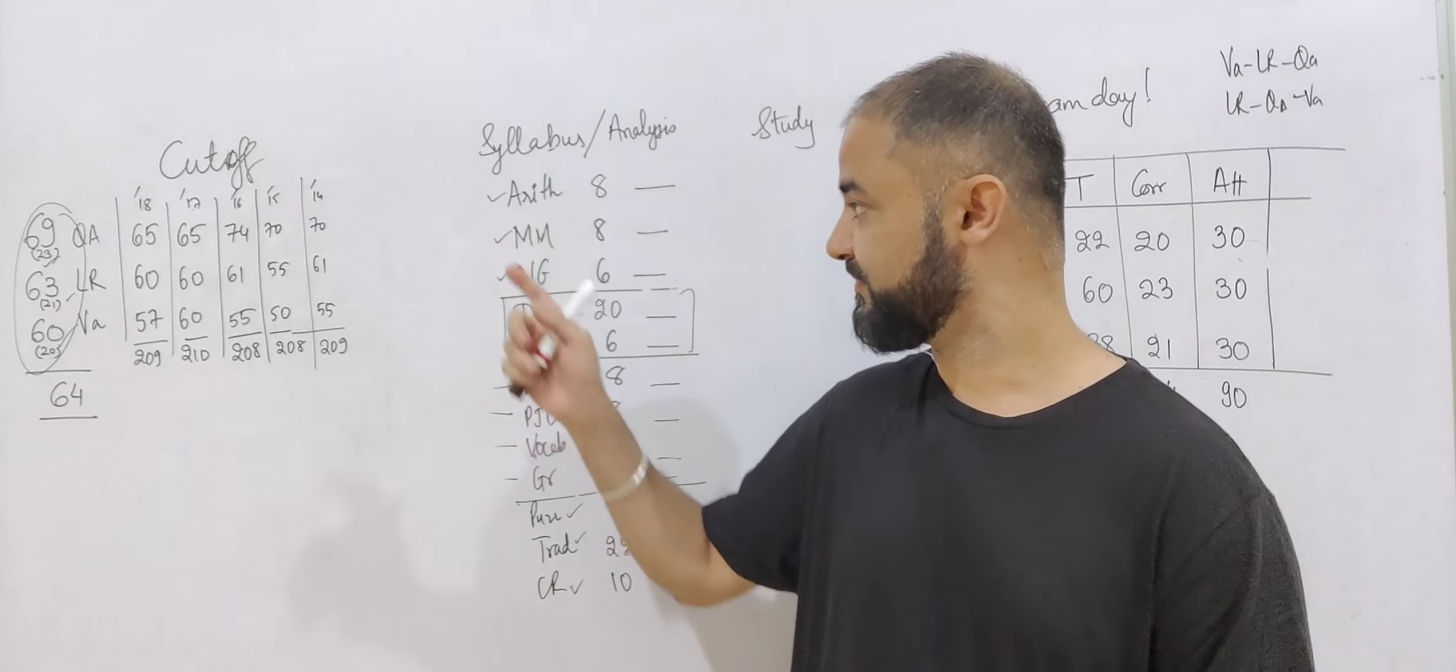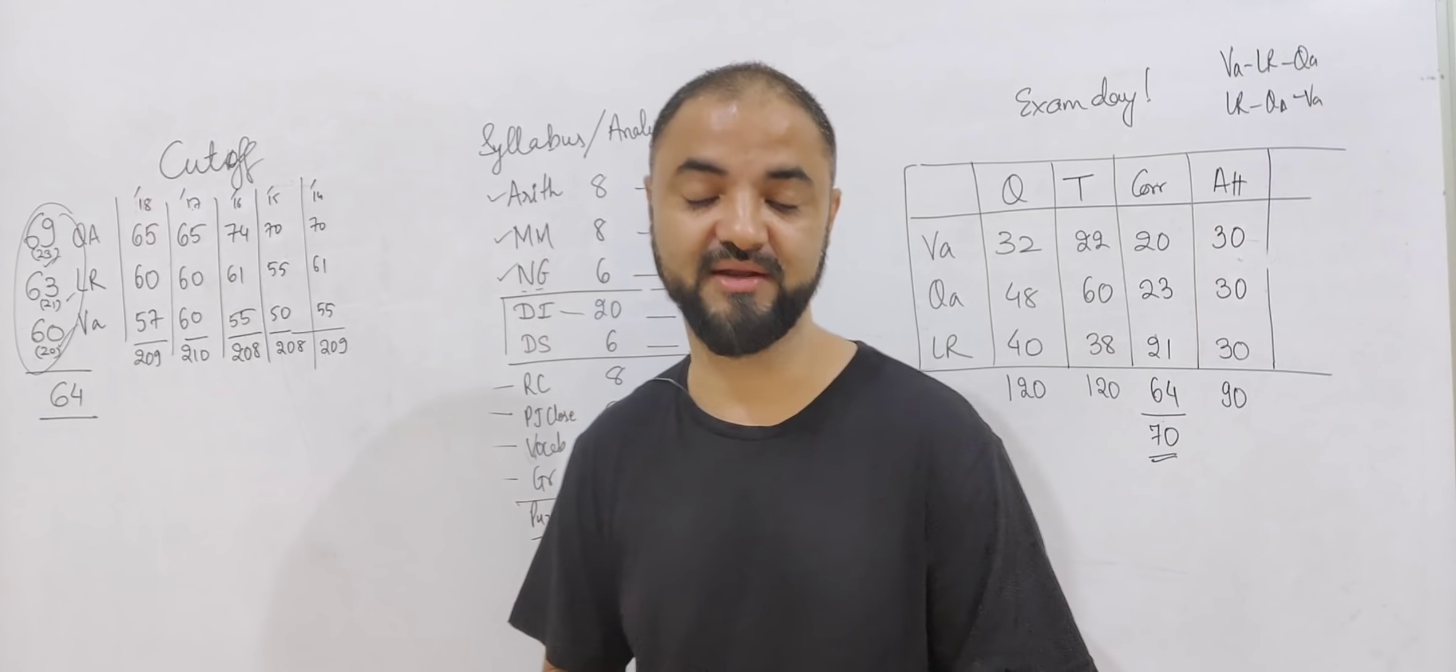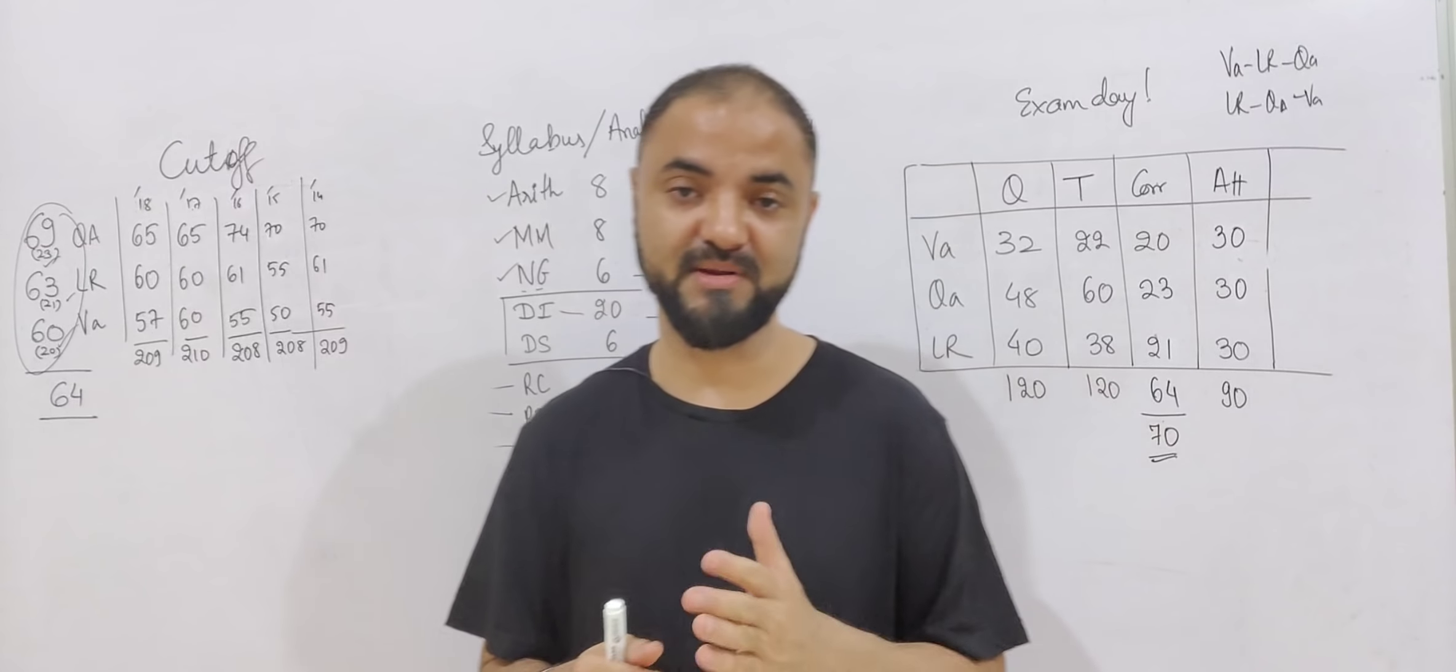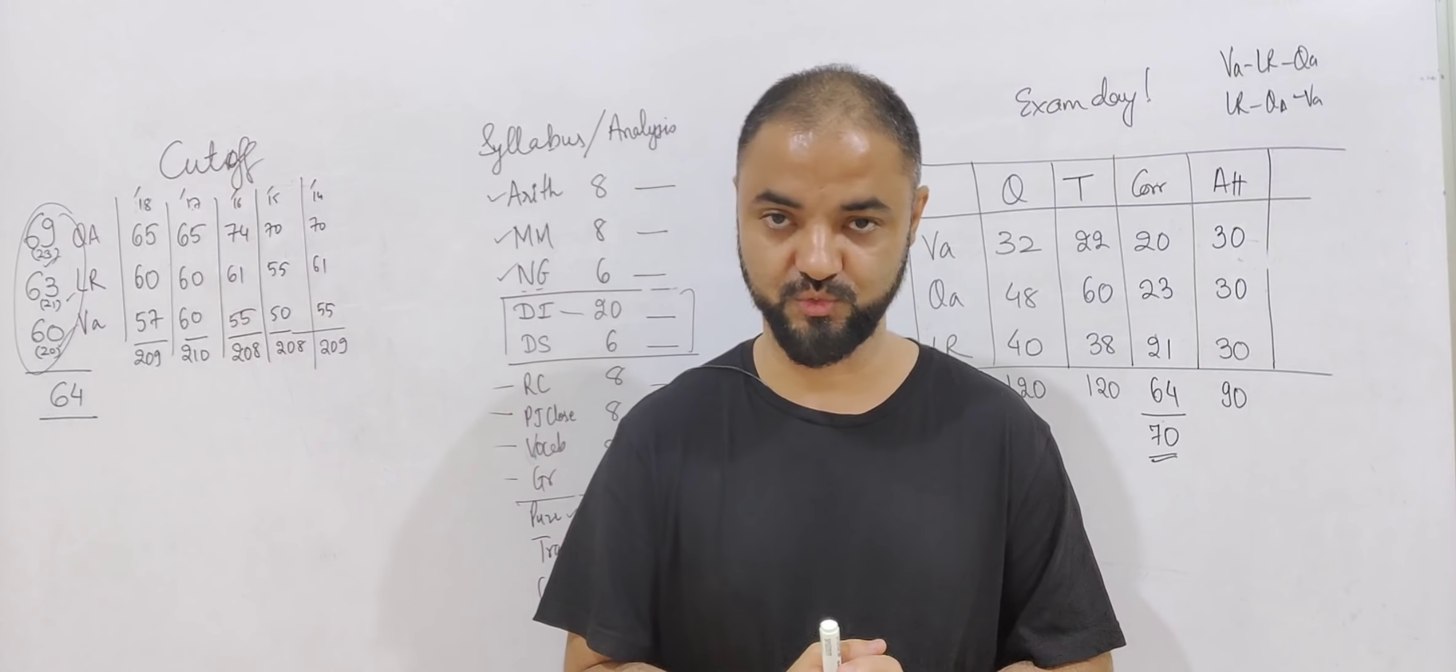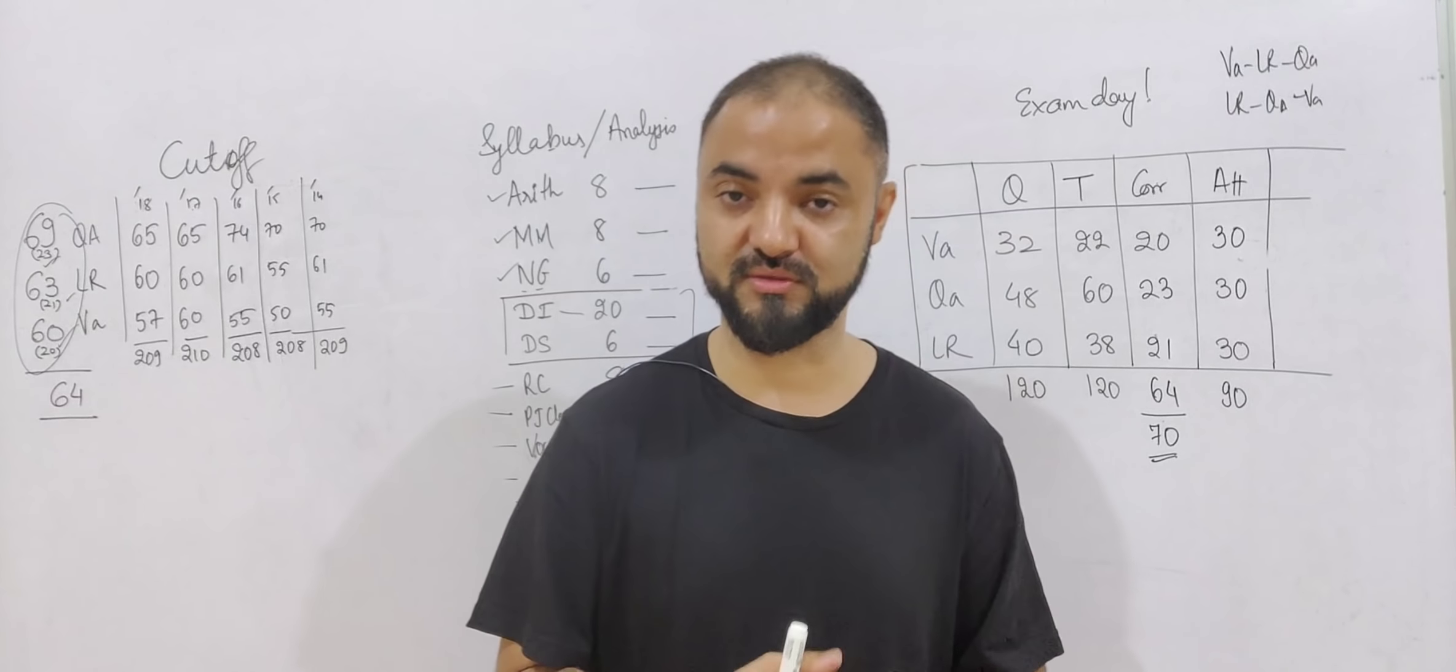If you're planning to join our mock series, along with the mocks we have created topic-wise tests for each of them. That's how you need to analyze as well. At Cat King we have around 8 mocks. So what I recommend is 4 mocks for attempt number 1 and 4 mocks for attempt number 2. In the mock you have to score minimum 180 to book your slot.